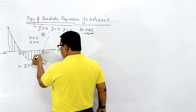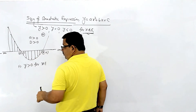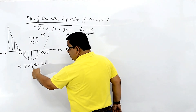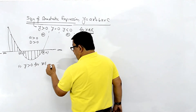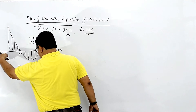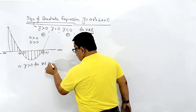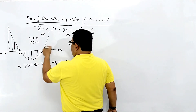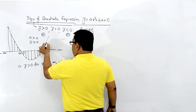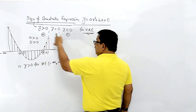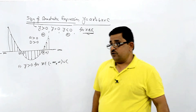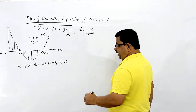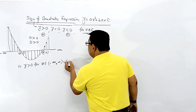The first case is y greater than 0. When x belongs to minus infinity to alpha, union beta to infinity, the value of y is positive. So y > 0 for x ∈ (-∞, α) ∪ (β, +∞).